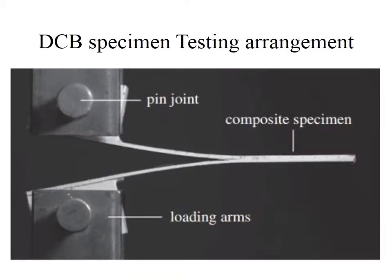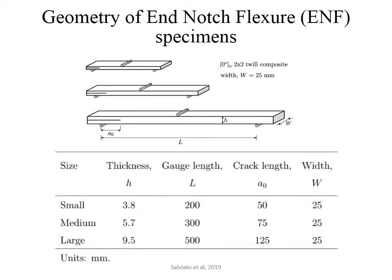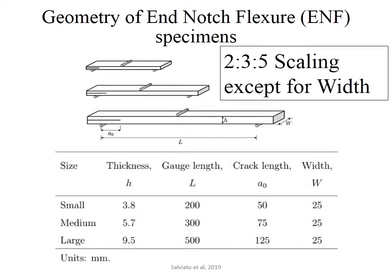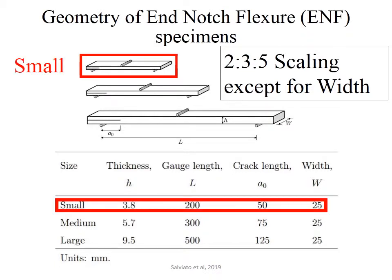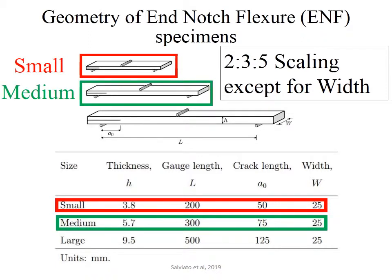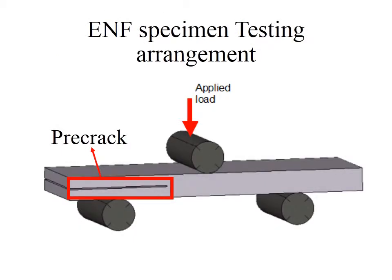This slide shows the testing arrangement of DCB specimens. This slide also shows the dimensions and testing arrangement of the 3 different size ENF specimens, scaled in all dimensions except width, which is constant for all specimens. The first one is small, the second is medium, and the third is large.